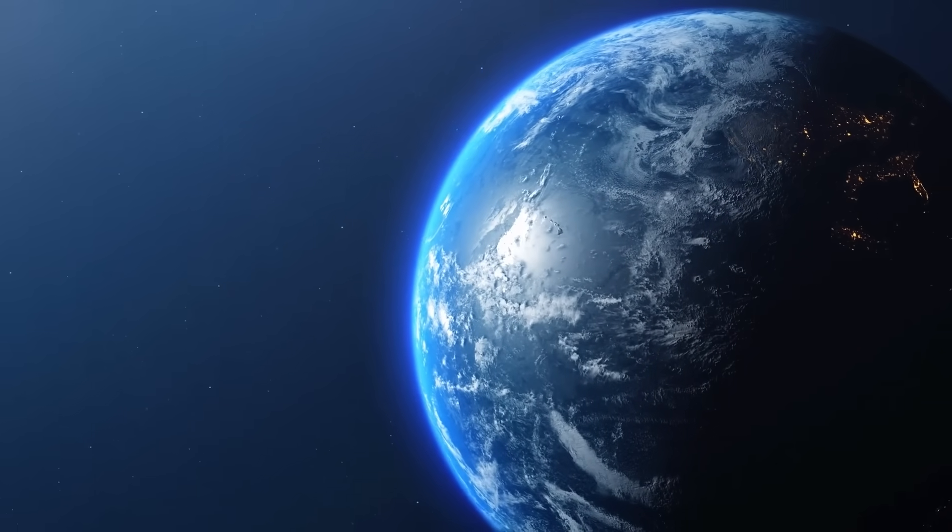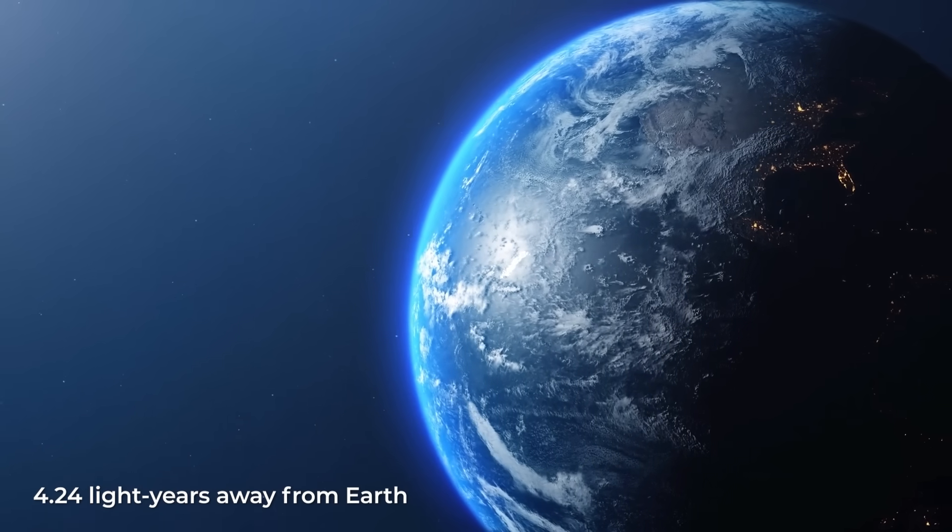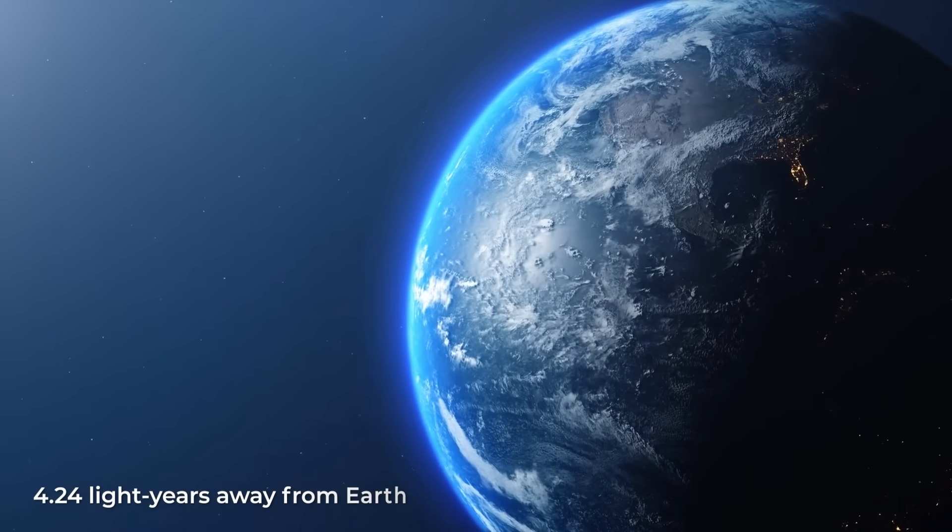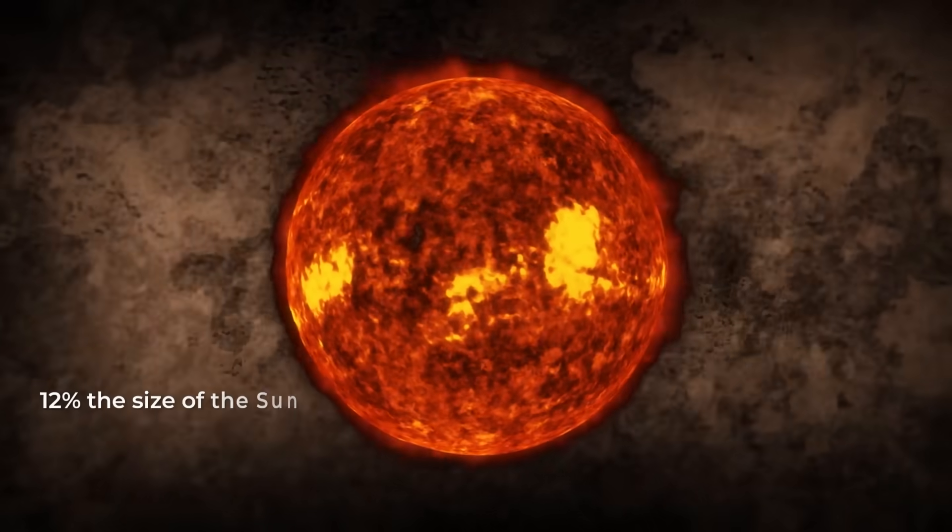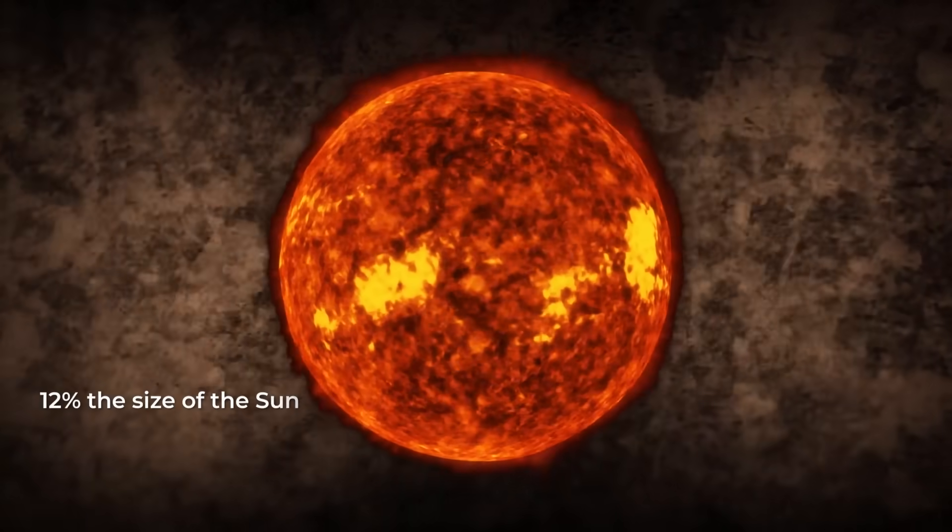Proxima Centauri is located about 4.24 light years away from us and is known to be the closest star to our solar system. This star is so tiny that it is only 12% the size of the Sun and emits a small fraction of its light.